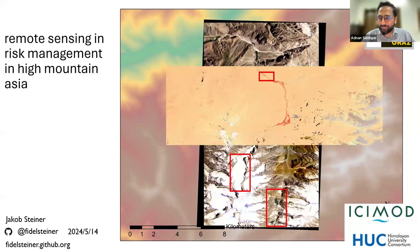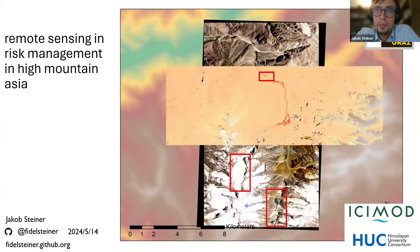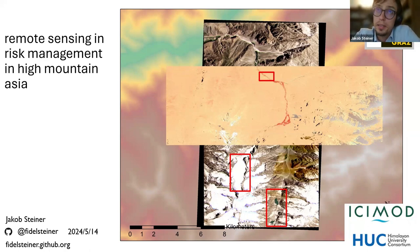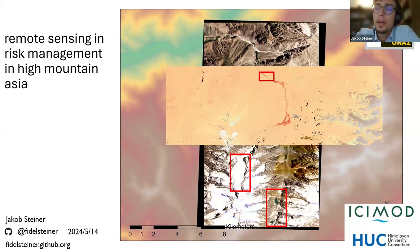Thanks to all of you for inviting me to speak today. My name is Jakob Steiner. I'm originally from Austria, and I'm based in Pakistan. I've been working in High Mountain Asia for nearly 20 years now. Today I want to talk about remote sensing and how it is used in risk management in High Mountain Asia, where the cryosphere is definitely a strong focus.